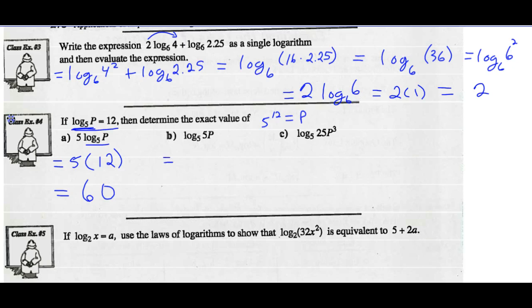Part B, if I use my product law, I could say the log of 5 base 5 add the log of P base 5. Now, we know the value for the log of 5 base 5 is 1. And we're told the value of the log of P base 5 is 12. So 1 plus 12, this has a value of 13.